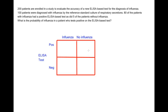Hi, Terry Schaniefeld here for UAB School of Medicine. In this video, we're going to discuss how to calculate the positive predictive value of a diagnostic test. So in this hypothetical study, 200 patients are enrolled to evaluate the accuracy of a new ELISA-based test for the diagnosis of influenza.